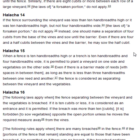Halakha 15. When a fence is ten handbreadths high, or a trench is ten handbreadths deep and four handbreadths wide, it is permitted to plant a vineyard on one side and vegetables on the other side, even if there is a barrier made of reeds with spaces in between them. As long as there is less than ten handbreadths between one reed and another, the fence is considered as separating between the vineyard and the vegetables.